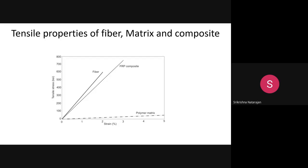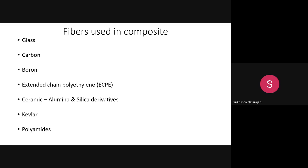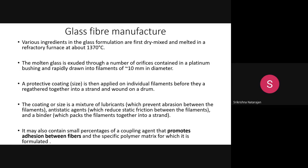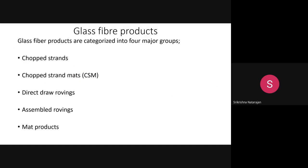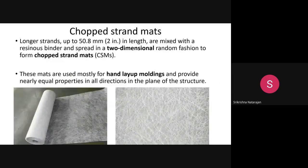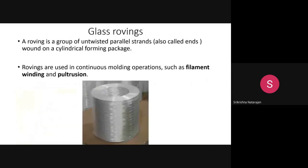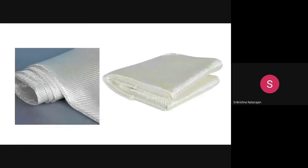When you make a composite, it is the fiber — the reinforcement — that is going to carry the load, not the matrix. There are many types of reinforcements like fiber, metal, or ceramic. We have been discussing fibers, especially glass fibers — their manufacture, structure, and different forms.